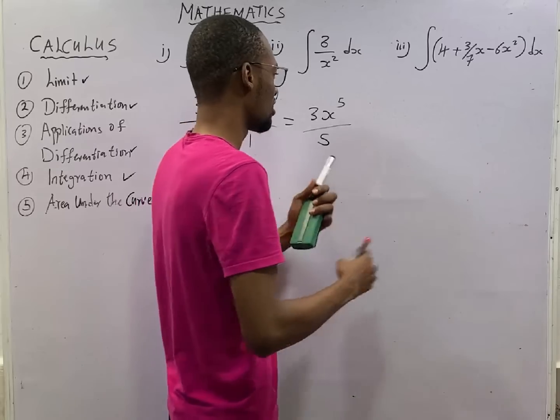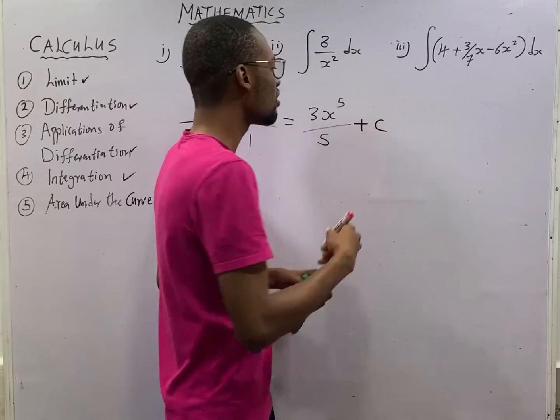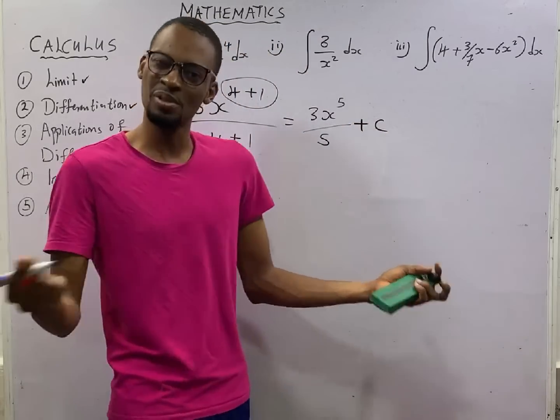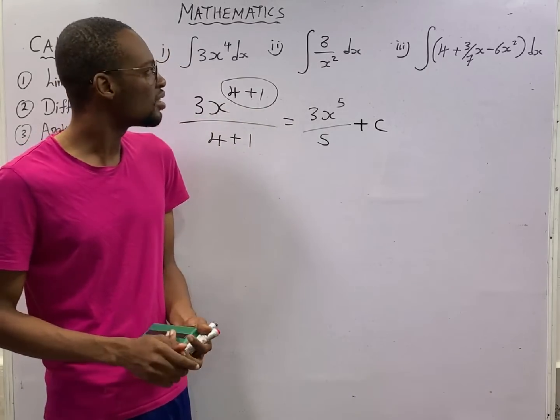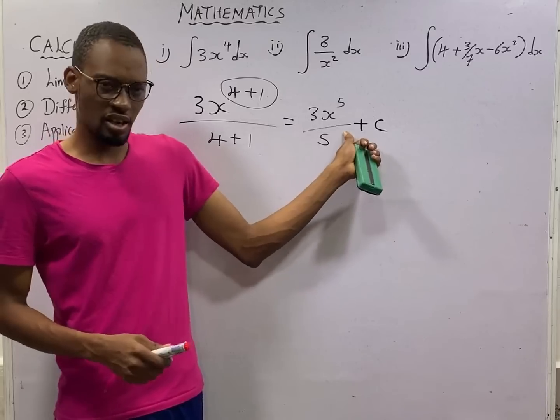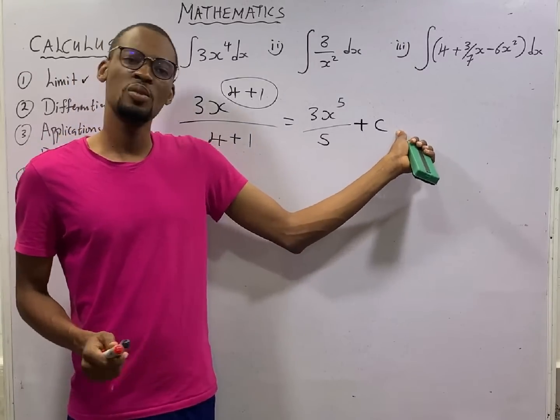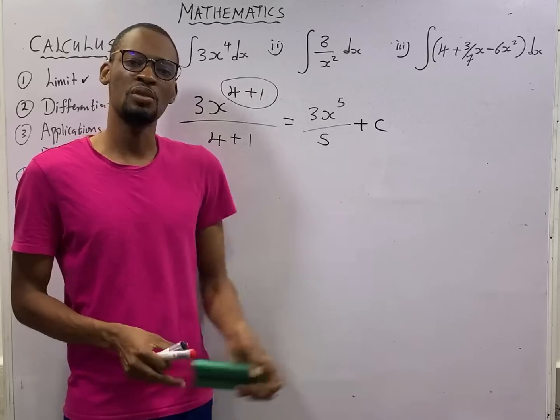This will give you 3s raised to the power of 5 over 5 plus c. For JAMB you see the options obviously with the ones with plus c, but in WAEC if you differentiate an indefinite integral without adding constant you may lose mark because it is very important to add plus c after integrating.